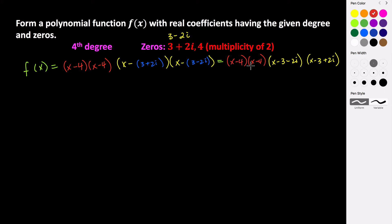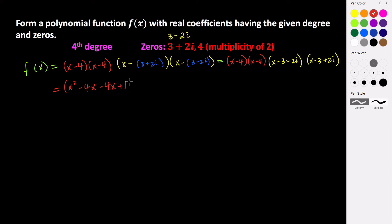Now we're going to FOIL and distribute to expand this polynomial function. So x times x is x squared, x times negative four is minus four x, negative four times x is negative four x, and negative four times negative four is positive 16. So our first binomial expanded is x squared minus 8x plus 16.